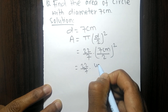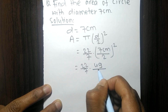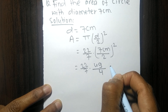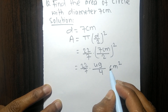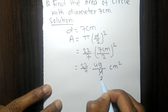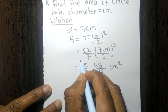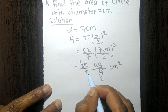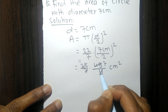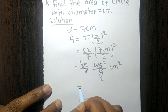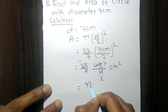7 squared is 49, and 2 squared is 4, giving us (22 × 49) / (7 × 4) cm². Simplifying: 2 times 11 is 22, and 7 times 7 is 49, so 11 times 7 equals 77.